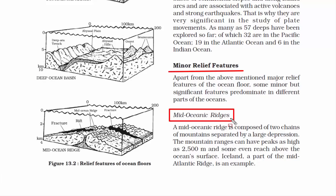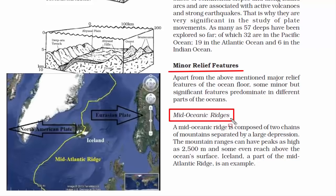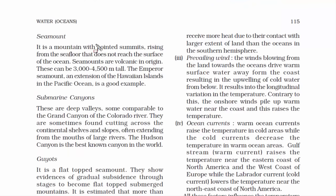The mountain ranges of mid-oceanic ridges can have peaks as high as 2,500 meters, and some even reach above the ocean surface. A good example is Iceland, which is part of the Mid-Atlantic Ridge.